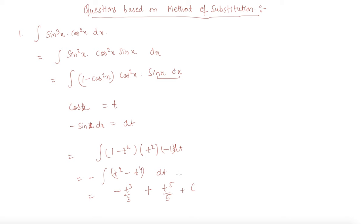Now I will put the value of what I have assumed t. This will become t to the 5 by 5, that is cos to the power 5 x by 5 minus cos cube x by 3 plus c. I hope you are clear about how to do the substitution so that the question becomes very easier. Let's see one more question.